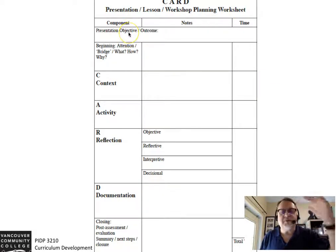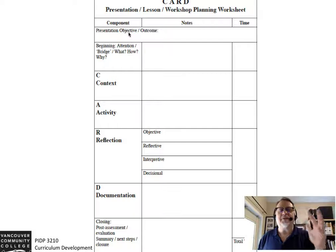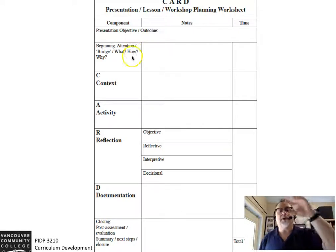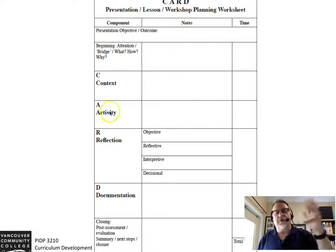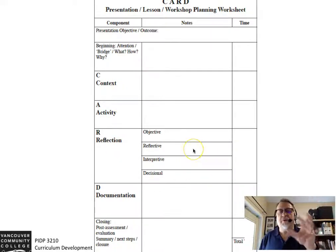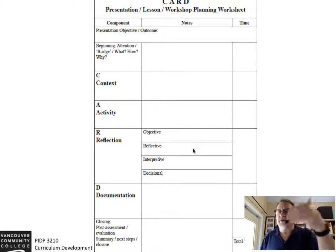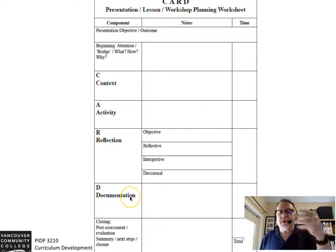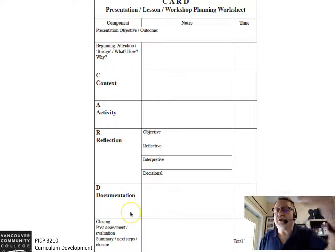It follows a seven-step methodology in a similar context. You've got the objective, the hook, the beginning, the context, the activity. Within the reflection component, there's a variety of reflective activities that you can engage in. The documentation is really summarizing these ideas. And then you've got the close or the summation.